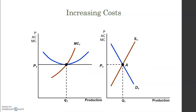Now let's look at the second case: increasing costs. The original situation is the same — the firm is in equilibrium where price equals marginal cost and profits are zero, since price also equals average cost. The price is determined by the market where demand equals supply.